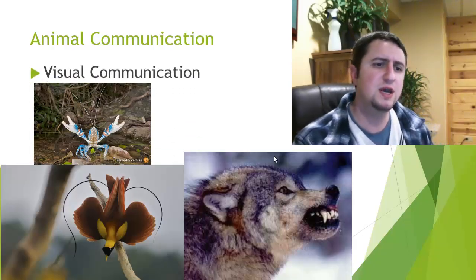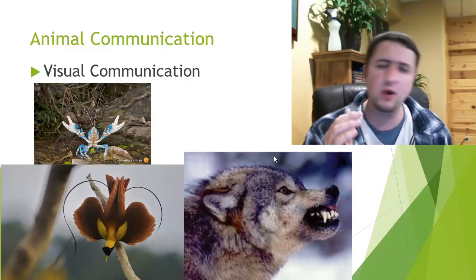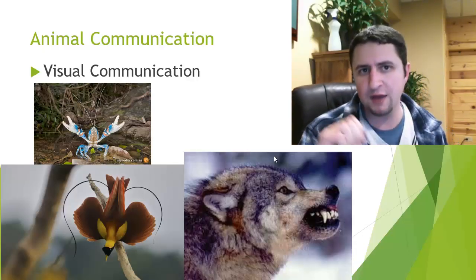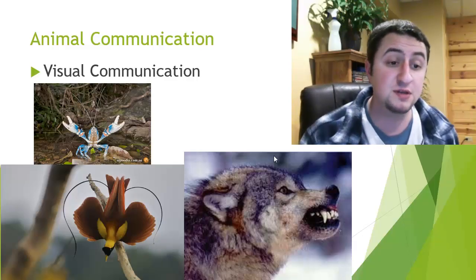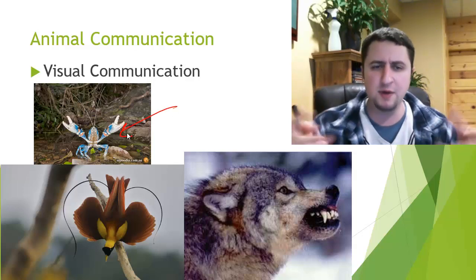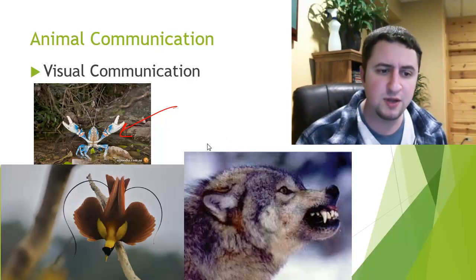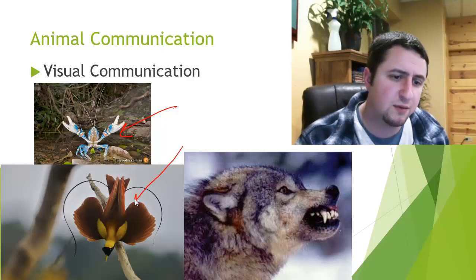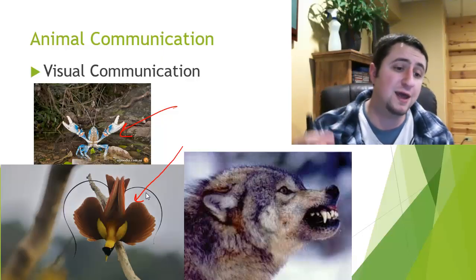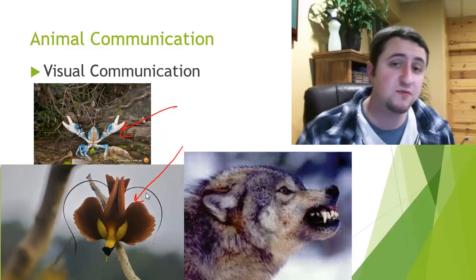Another type of animal communication is visual communication — what can you see? This typically happens only in organisms that are out during the day, since organisms out at night don't communicate very well visually. This crab here is giving off that 'don't mess with me, you're going to get pinched' type signal — a warning to potential predators. And this bird here, from Papua New Guinea, is one of the birds of paradise. That is a male bird being flashy and showing off to attract females — another type of visual communication.